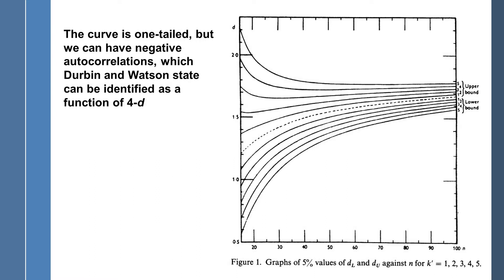Now this curve that they presented is one tailed. But it is possible to have negative autocorrelations. And Durbin and Watson simply state that you revise the function in the form of 4 minus D. And again, I'm not going to go into the computation of D here. That's not the purpose.